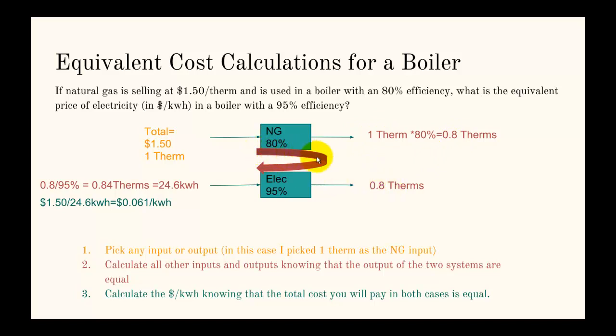The output's the same, so 0.8, and that's why we have the 0.8 there. Following this arrow here, since we have the output of this, we can now go backwards and find the input by dividing by the efficiency. Output divided by efficiency equals the input, so in this case the input's 0.84 therms. Using unit conversion, we can find that that's 24.6 kilowatt hours.